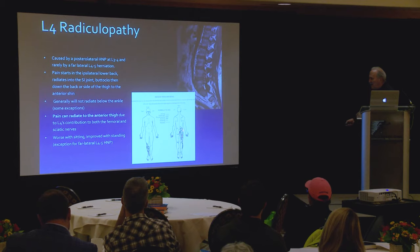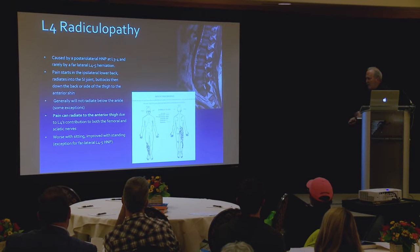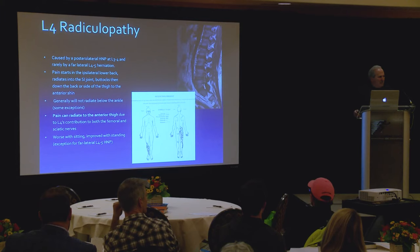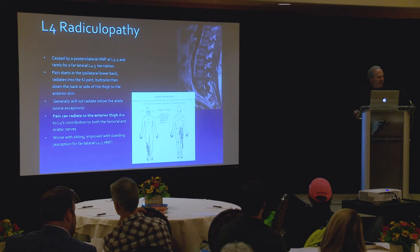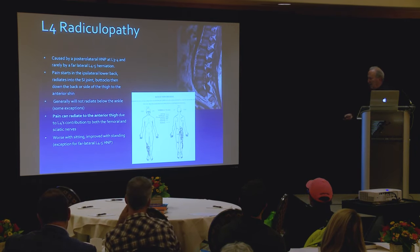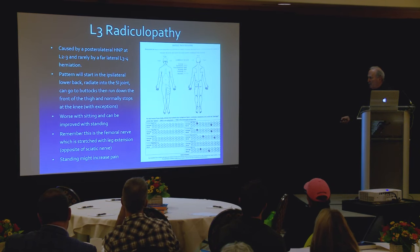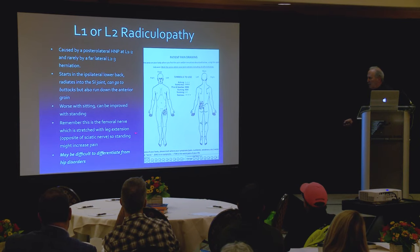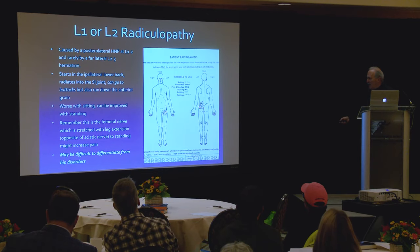L4 radiculopathy: the classic pattern is buttocks pain, posterior thigh, then lateral aspect of the foot, not going down to the ankle. If you think you have an L4 radiculopathy, the two muscles to test are tibialis anterior and quadriceps femoris. An L3 radiculopathy: the person has anterior thigh pain that can go to or below the knee, with the buttocks still involved. L1 or L2 radiculopathy typically doesn't radiate to the buttocks, but L1 and L2 will — and this pattern overlaps with hip presentations.